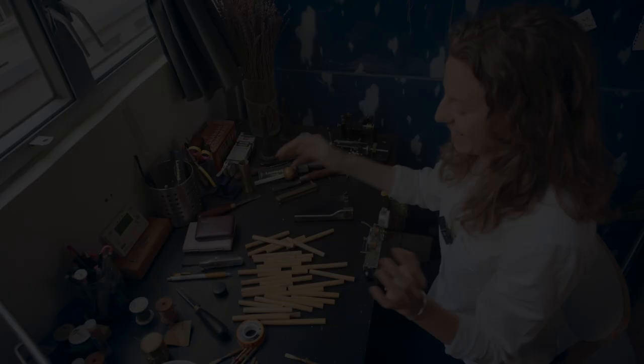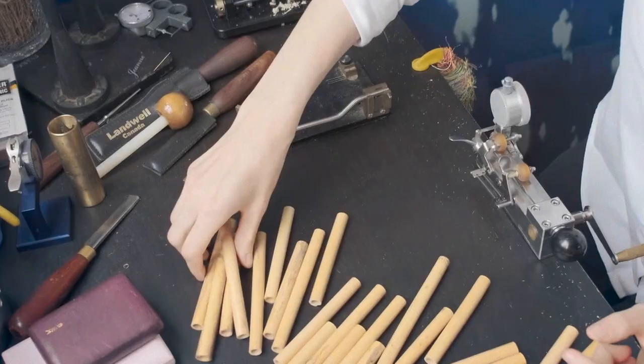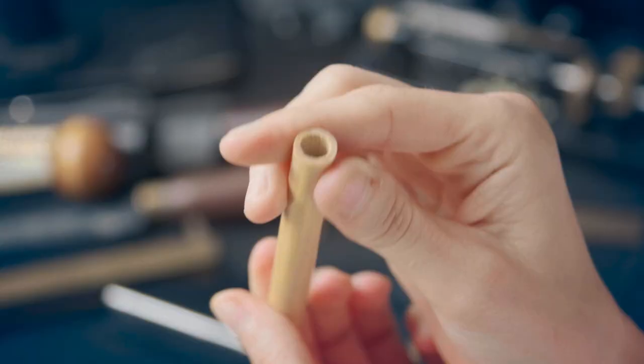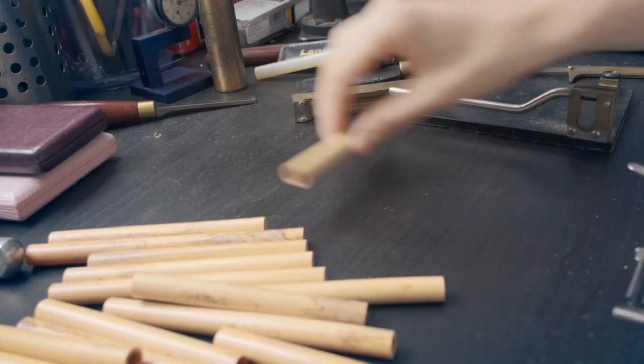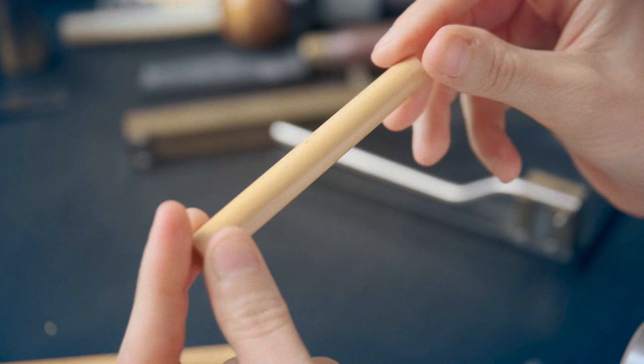Here we begin. The very start of reeds, just some bamboo cane here. And what you're looking for is straight pieces. Sometimes you can just roll them, and the way they roll, you can tell if they're straight. Also, you're looking just at the general health of the cane.